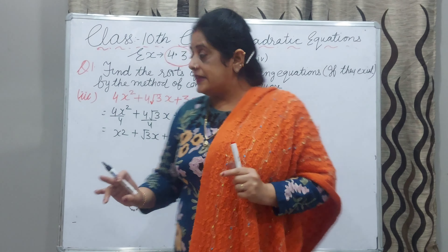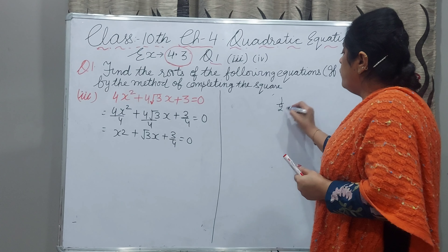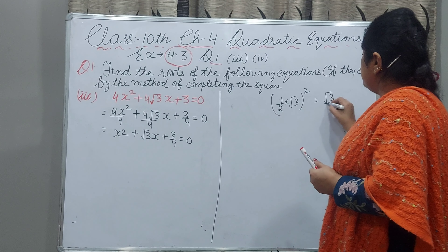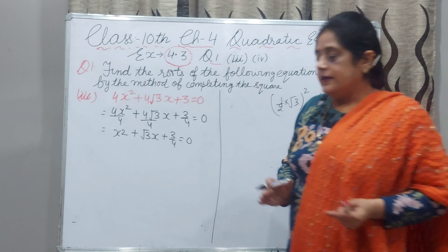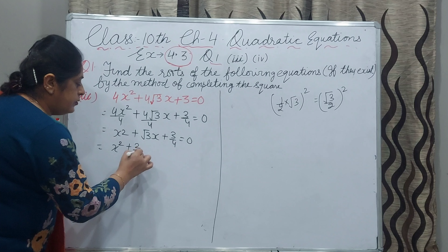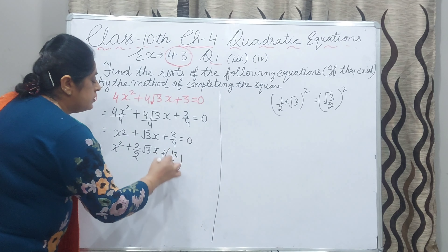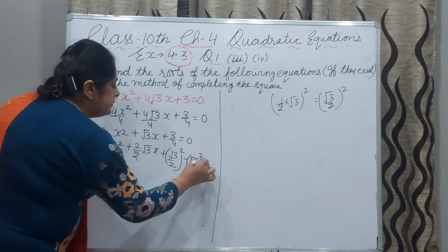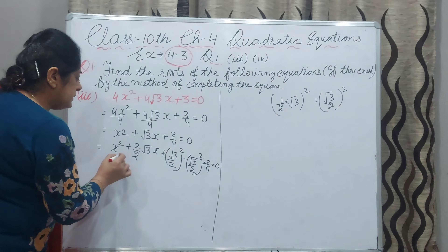The next step: what is the coefficient of x? The coefficient of x is √3. You have to take half of it — half of √3 is √3/2. You have to do the square: (√3/2)². One time you add this in the equation and one time you subtract it. So you write: x² + 2·(√3/2)·x + (√3/2)² − (√3/2)² + 3/4 = 0.